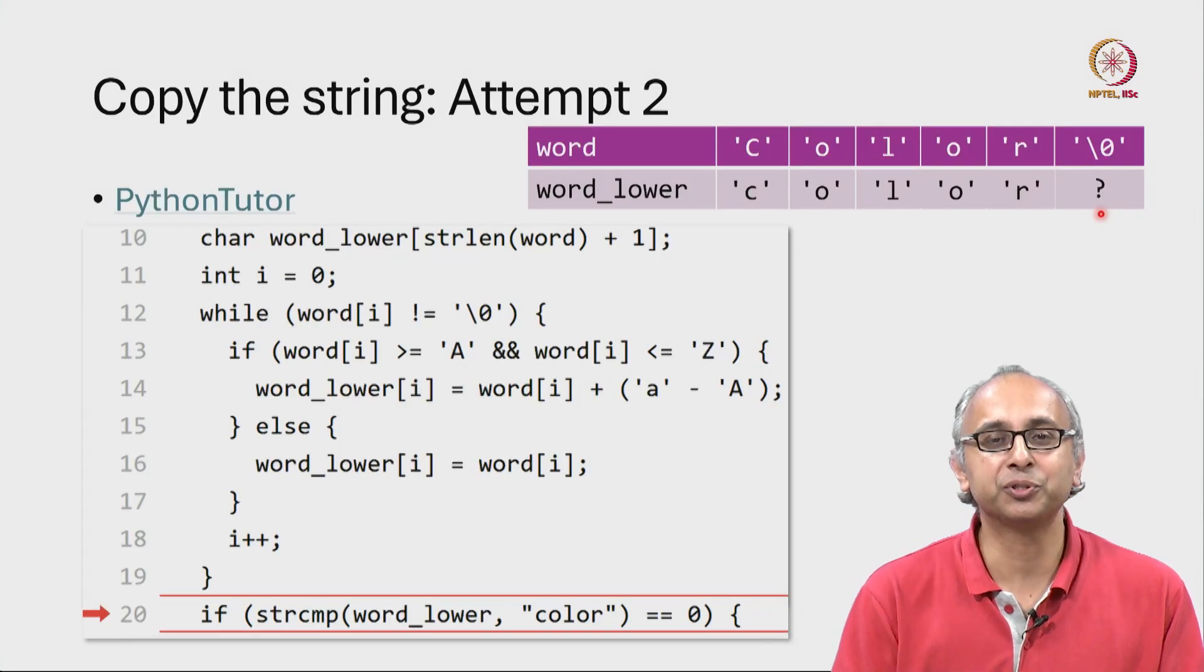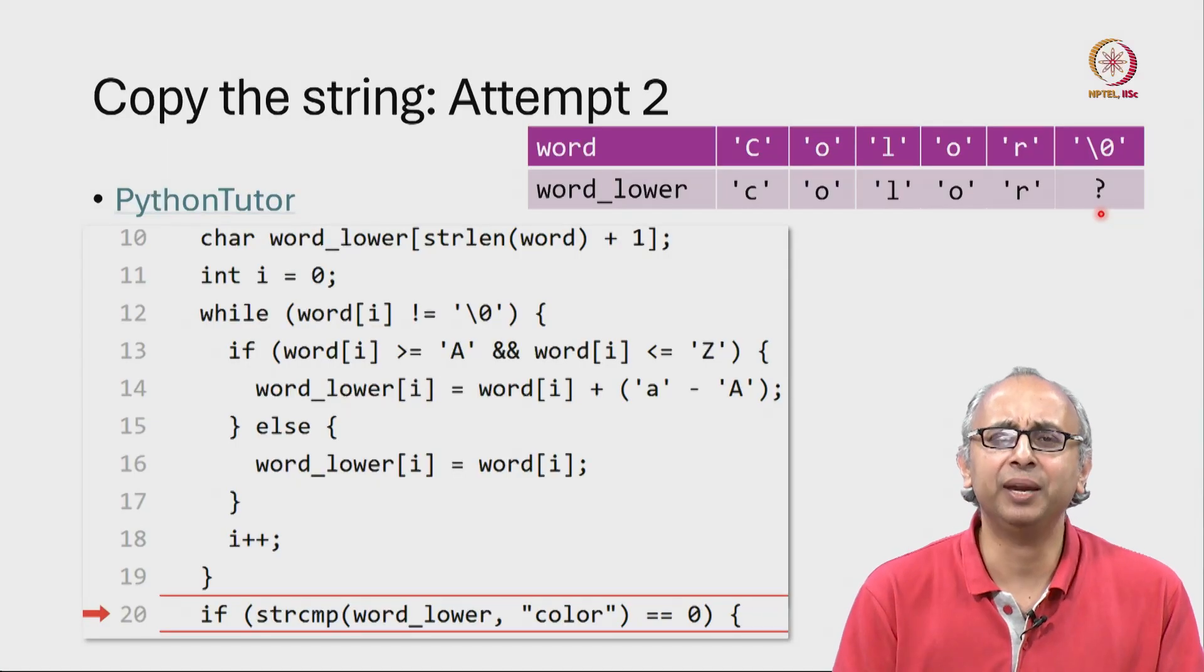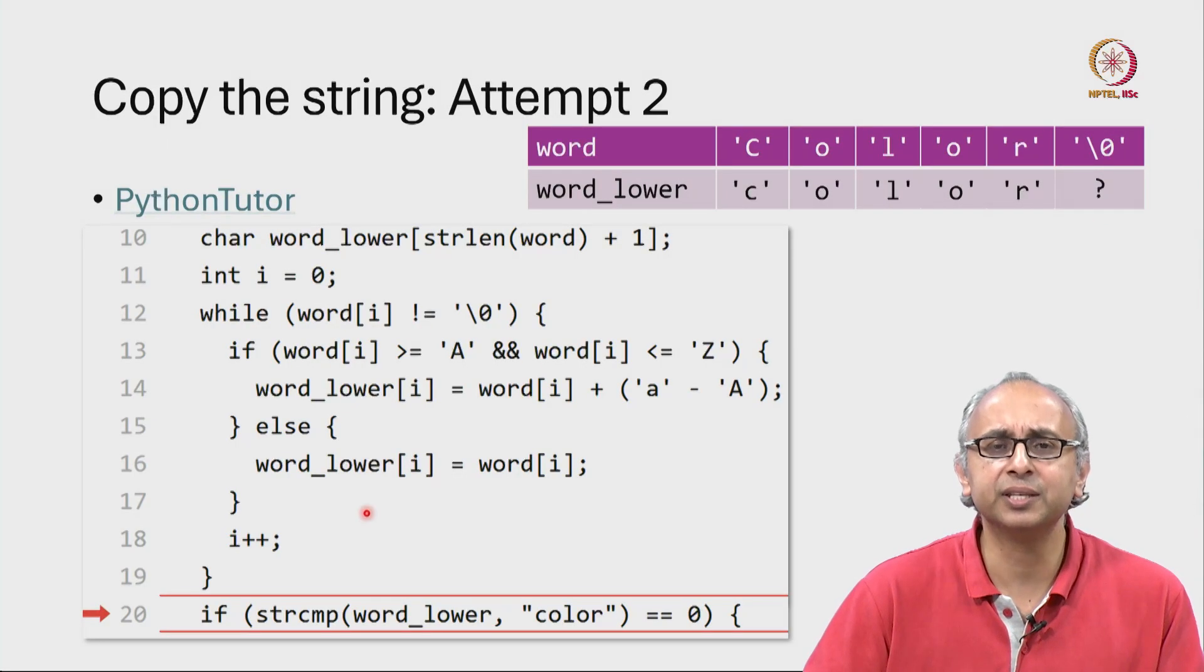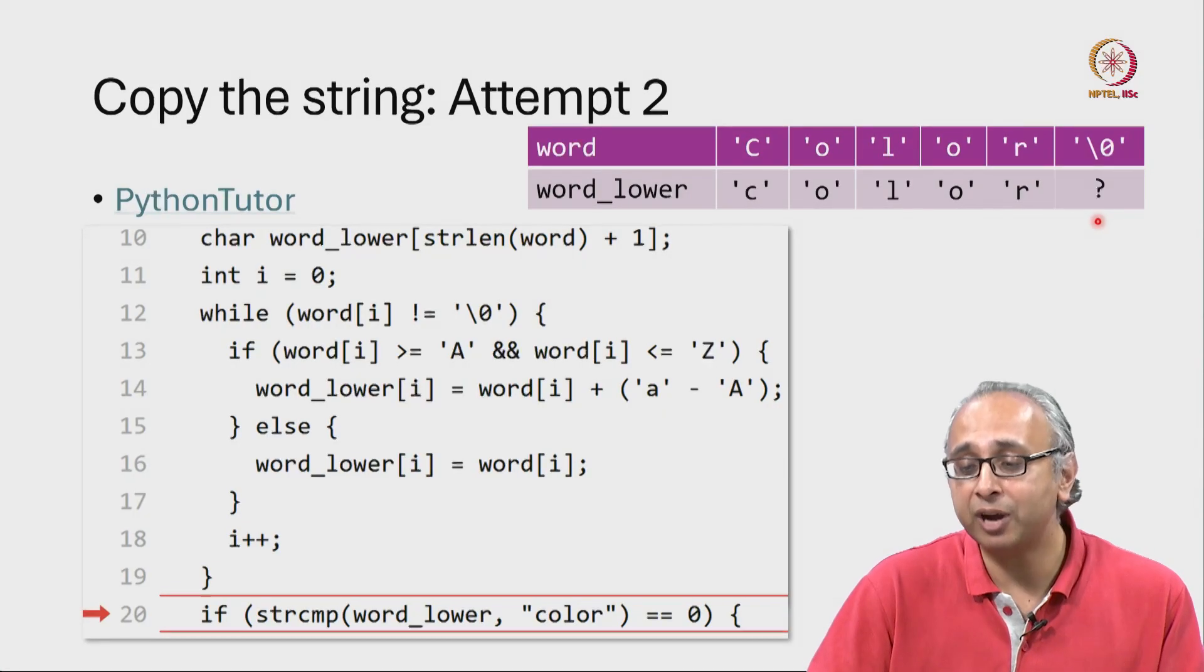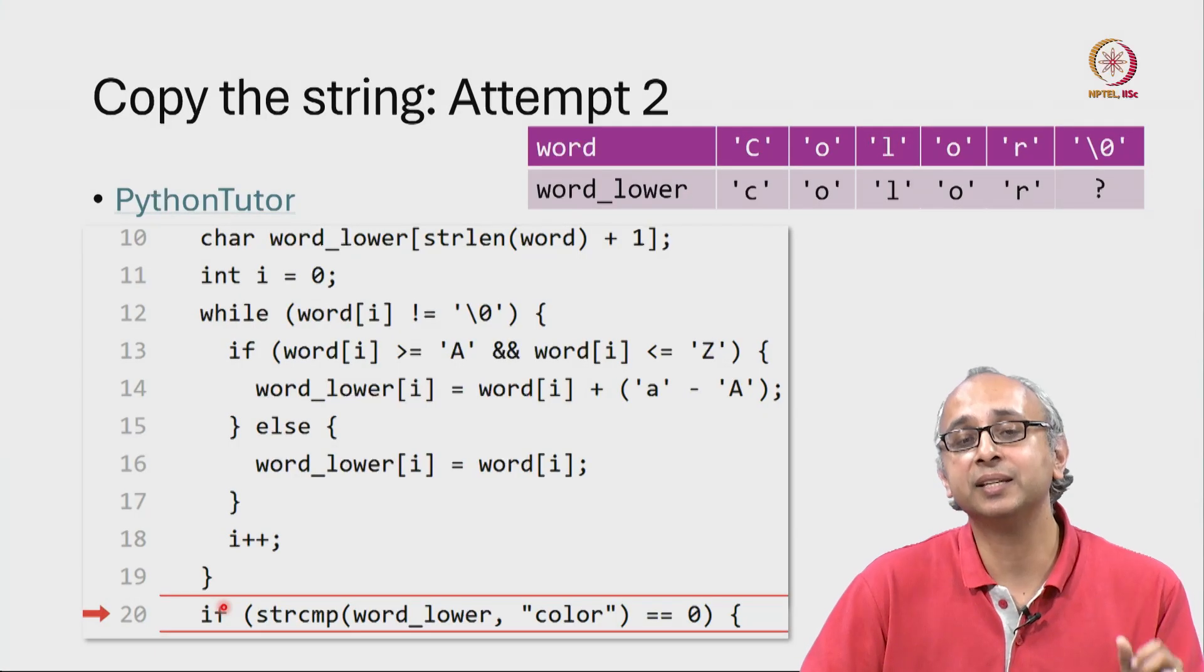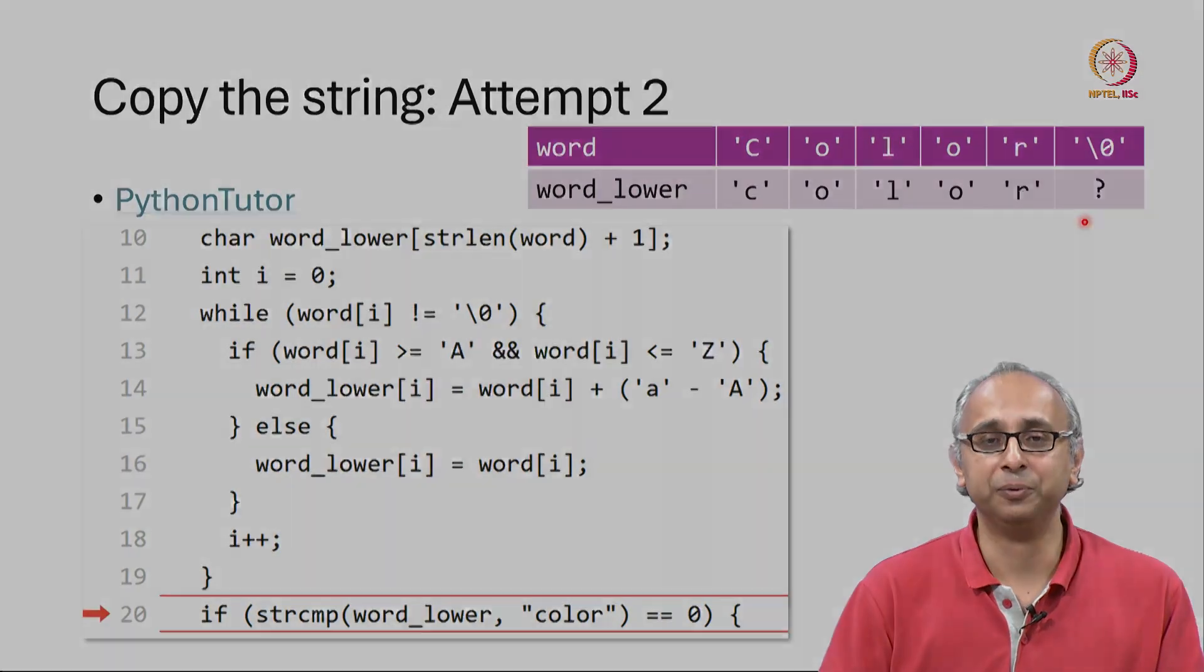So this approach is incorrect but fortunately there's an easy way to fix it. Remember that when this while loop finishes in this case the value of i is 5. In general the value of i will be the index of this last location. So after this while loop we simply have to write a null character at that location. So let's do that now.